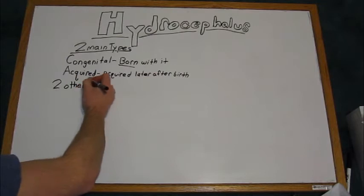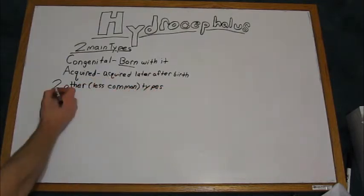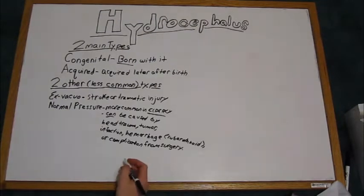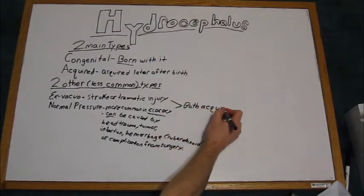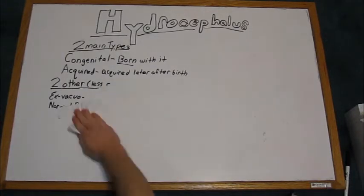There are two other, less common forms of hydrocephalus. The first of which is ex-vacuo. Ex-vacuo hydrocephalus is acquired from stroke, traumatic injury, while normal pressure hydrocephalus, the second of the two, is more similar to acquired hydrocephalus and is more common in the elderly.